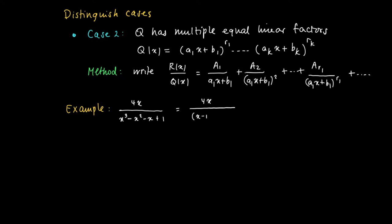Notice that we may factorize the denominator by (x - 1)² times (x + 1). So (x - 1) is a linear term which appears two times.